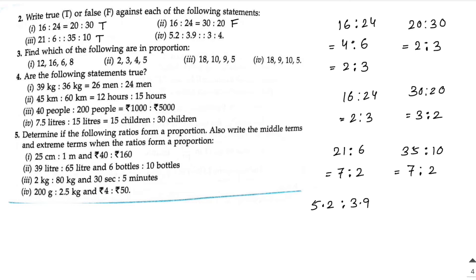Last one: 5.2 is to 3.9. You can write this as 52 by 39 by multiplying both by 10. Divide by 13: 13 × 4 = 52 and 13 × 3 = 39, so it becomes 4 is to 3. The next ratio is 3 is to 4. Not equal, so it's false.